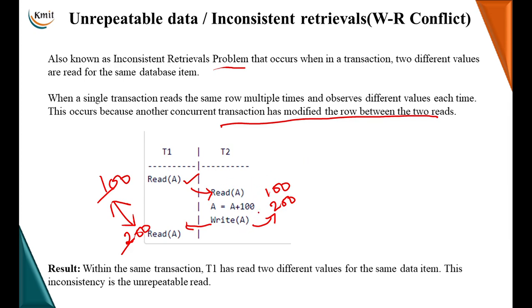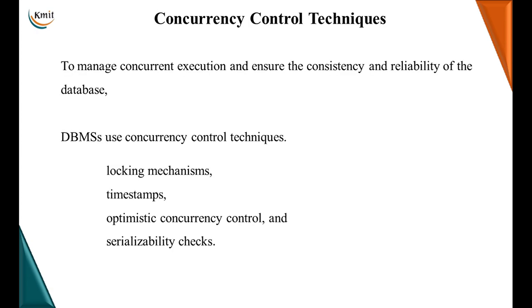Look at this. This has modified. So, within the same transaction, T1 has read two different values of the same data. This is called as inconsistent retrieval or unrepeatable reads.